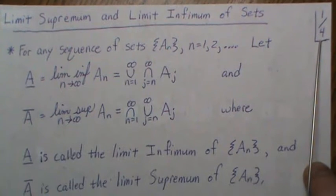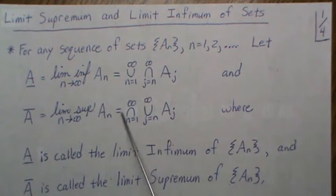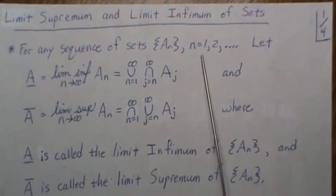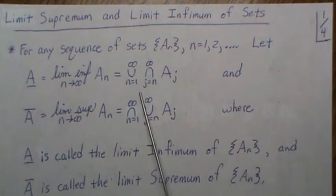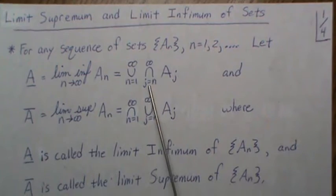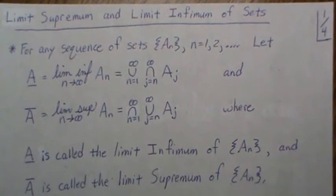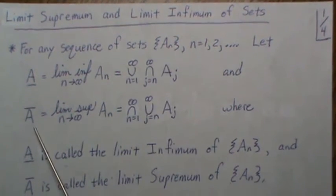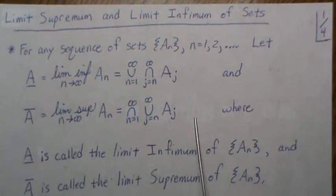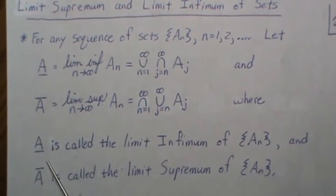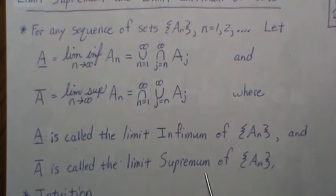I have four pages but I'm going to cover the first two pages in part one and three and four in part two. For any sequence of sets A_n, let A-underscore, the limit infimum as n goes to infinity of A_n, be defined as shown. We'll go step by step through what this means. The limit supremum, A-overline, is defined similarly. A-underscore is called the limit infimum and A-overline is called the limit supremum.